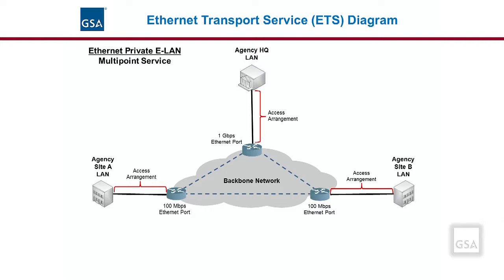For example, as shown in the diagram, 100 megabits per second at the remote sites and 1 gigabyte per second at the headquarters site. Each required access arrangement should be able to support the bandwidth capacity of the associated Ethernet port. The following slides will touch upon the features, options, and pricing elements required for Ethernet transport service.